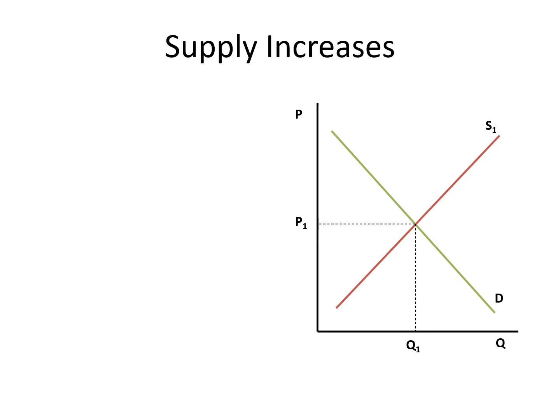When supply increases, an increase in the amount producers are willing and able to supply causes the market supply curve to shift outwards or to the right. This may occur due to a fall in the cost of production — for example, falling wages, improvements in equipment, advancements in technology, an increase in subsidies, or a decrease in taxes. All of these factors cause the supply curve to shift outwards to the right.